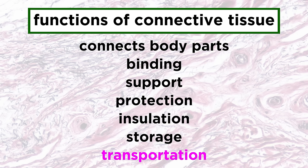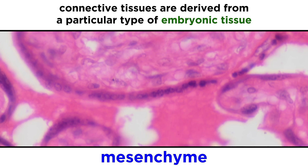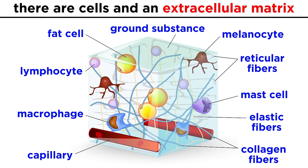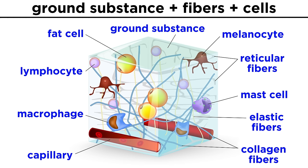While these are rather disparate purposes, there are some things that all connective tissue has in common. They are all derived from a particular type of embryonic tissue called mesenchyme, and they are comprised not just of cells, but also of an extensive extracellular matrix. This matrix is what makes this type of tissue so good at withstanding lots of force or tension. Connective tissues are comprised of ground substance, fibers, and cells, and the first two of these components make up the extracellular matrix.